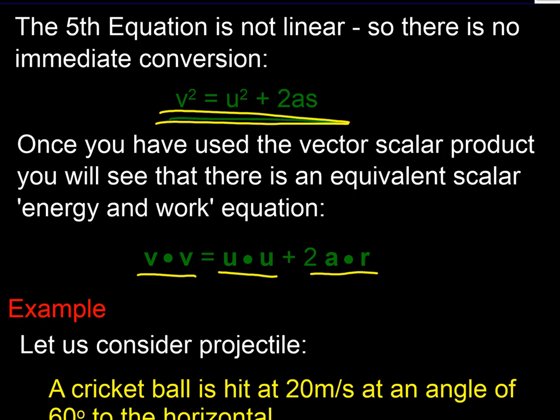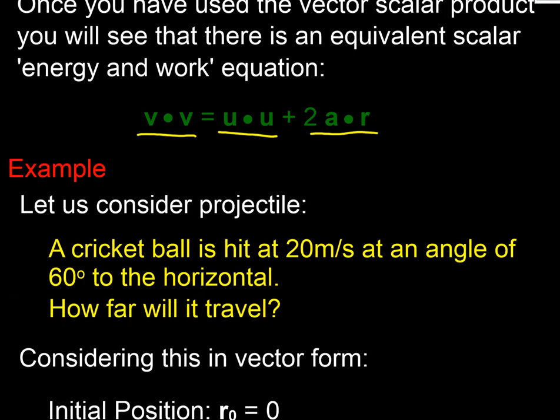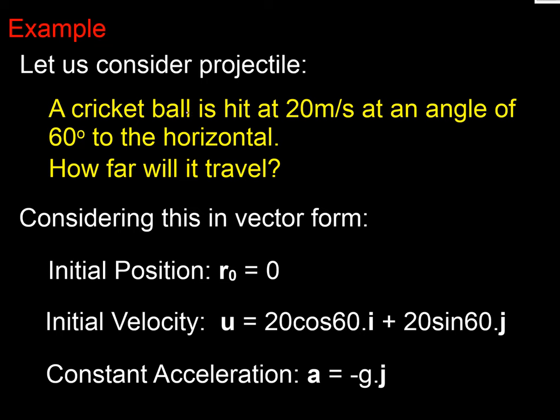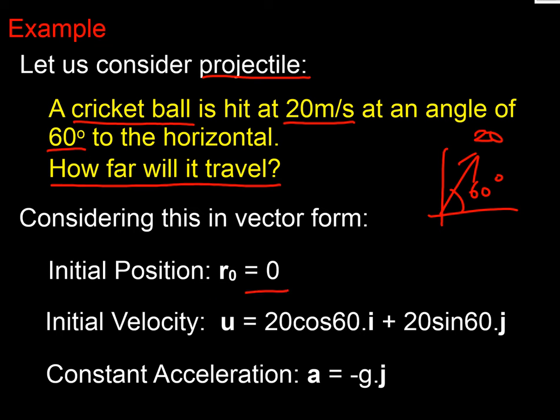Let's have a look at how we could use these in a SUVAT environment. Here we have a projectile. We've got a cricket ball. It's hit at 20 meters per second and the angle is 60 degrees off the horizontal. We're hitting it up like that, 20 at 60 degrees. How far will it travel? That's the question. Let's start looking at things in vector form.